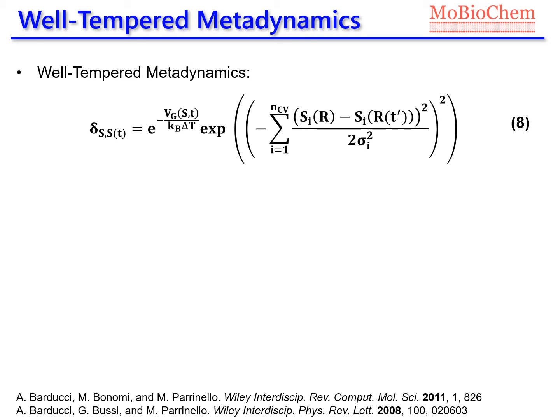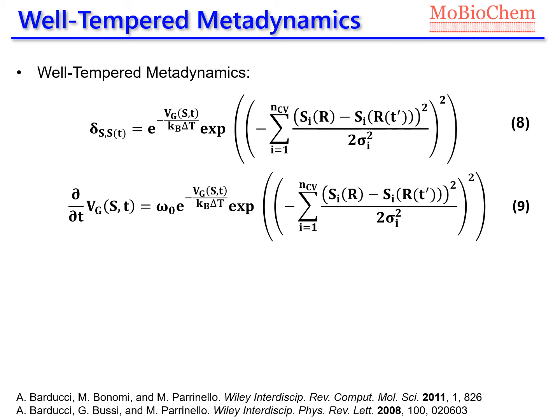If the time derivative of the histogram is defined as a Gaussian function, then the time derivative of the bias can be written as this expression here.